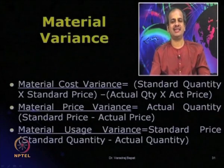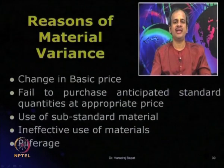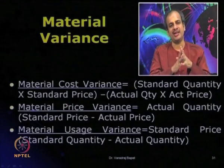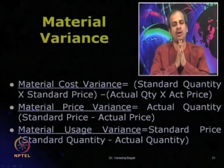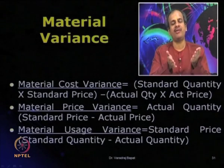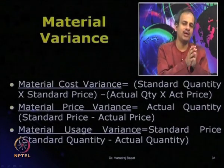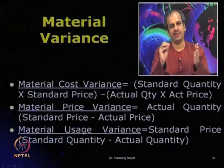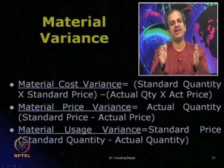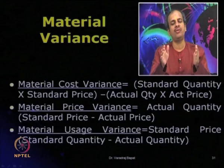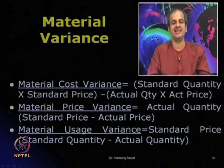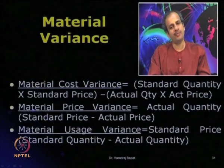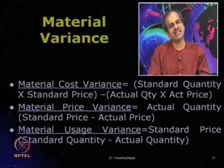Now let us look at labor variances. Just as with material variances, think of what may cause labor variance. To make one unit as per the standard, we take 5 hours. In actual, if we have done the same job in 4 hours, what could be the reasons? Those are the reasons for labor variances. Can you think of what leads to labor variance?